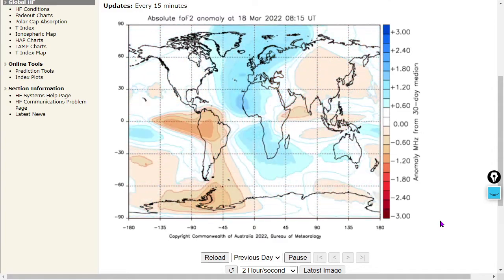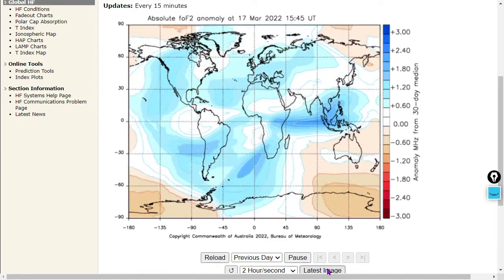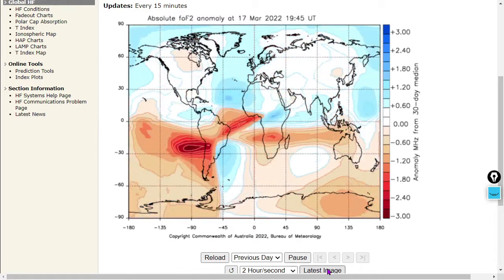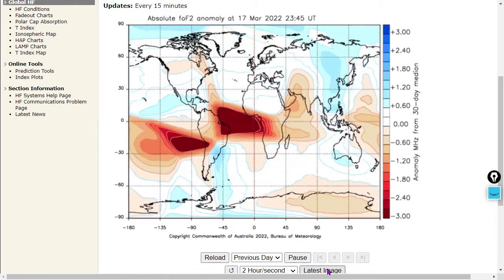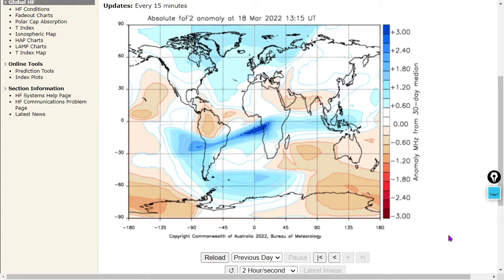Remember folks, March is the second most geomagnetically active month. So let's let this play through. We'll bring up the latest image from the anomaly gram and ionogram. There's the ionogram from 1315 universal time, and there is the anomaly gram.